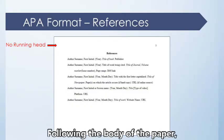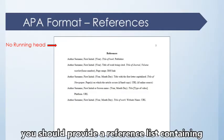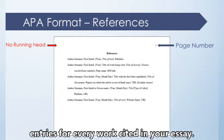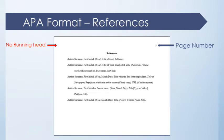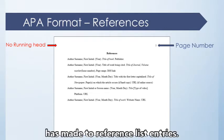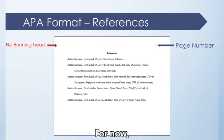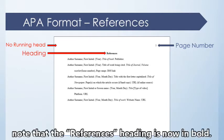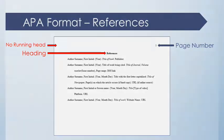Following the body of the paper, you should provide a reference list containing entries for every work cited in your essay. I will highlight the changes the 7th edition has made to reference list entries shortly. For now, note that the 'References' heading is now in bold.